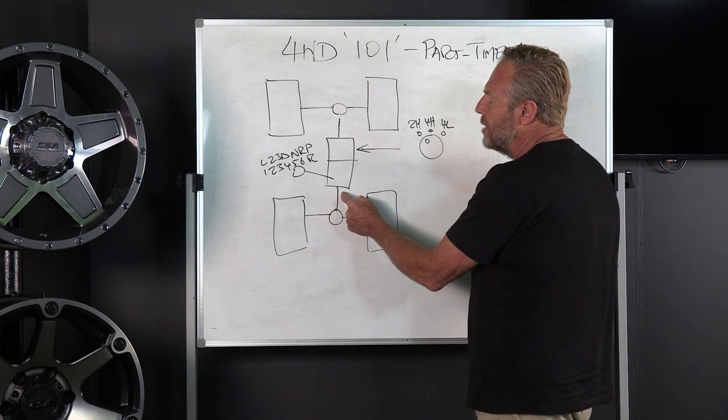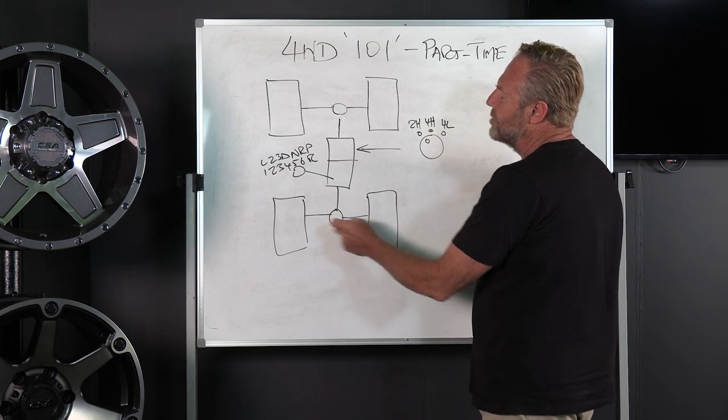Then as we go down the back end we've got the rear propeller shaft, rear differential, rear axles, and the back wheels.